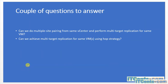A couple of questions I'll answer during this video series based on viewer feedback: Can we do multiple site pairing from the same vCenter and perform multiple target replication for the same VM? No — and I'll demonstrate that. Can we achieve multiple target replication for the same VM using a hopping strategy — where site A replicates to site B, and then the replica at site B is used as a source to replicate to site C? We'll look at that too.